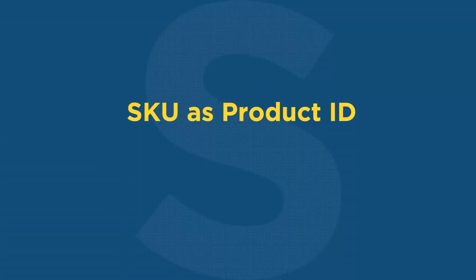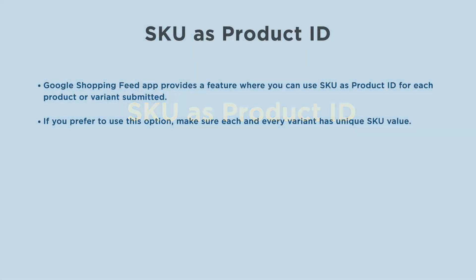SKU as Product ID: the Google Shopping Feed app provides a feature where you can use SKU as product ID for each product or variant submitted. If you prefer to use this option, make sure each and every variant has a unique SKU value.